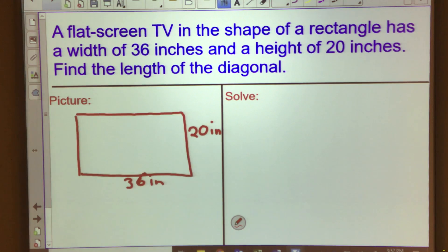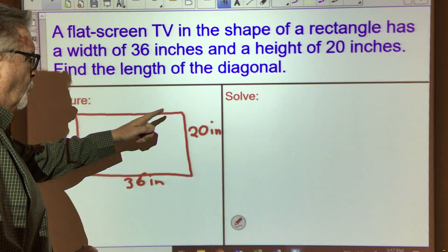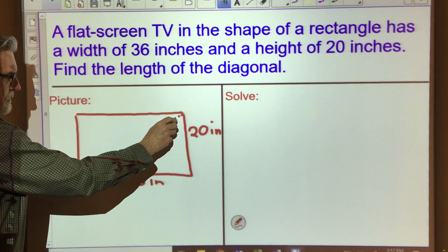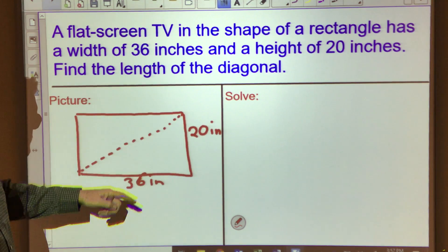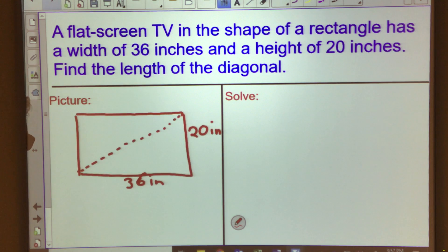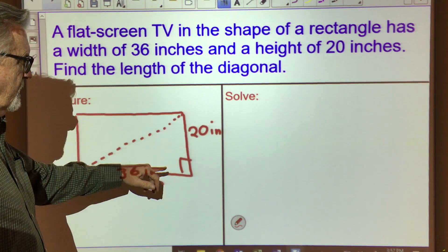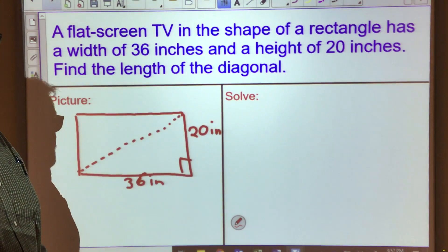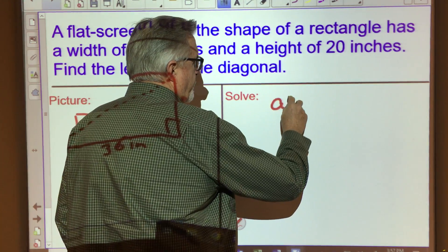And then it says to find the diagonal. Remember, diagonal is from one corner to the opposite corner, so this is the line that we're looking for. Let's stop and look at our picture that we've drawn that shows this situation. And there is a right triangle there. Here's our right angle. So our 36 and our 20 are the legs of our right triangle, so when we plug this into our theorem...